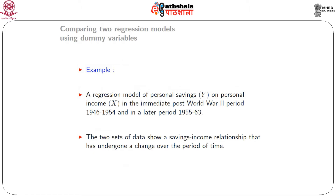Let me start with an example of the regression of personal savings on personal income for two datasets from two different periods: one for the period right after the Second World War, between 1946 and 1954, and the second between 1955 and 1963. Personal savings is the dependent variable Y, and personal income is the independent variable X.